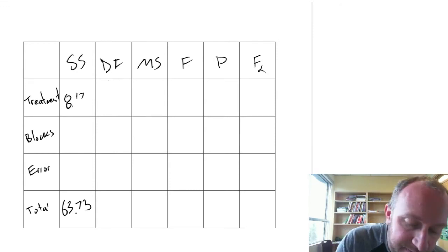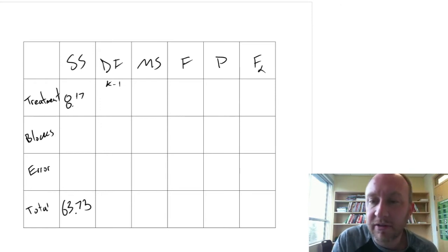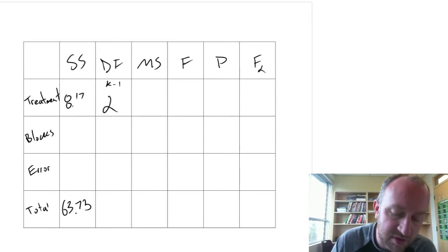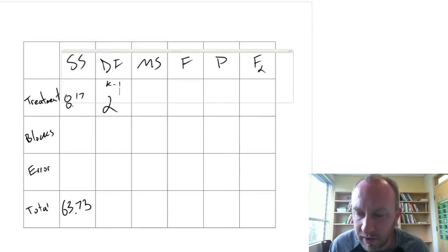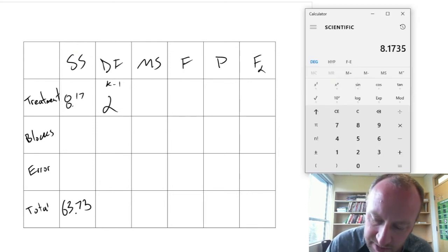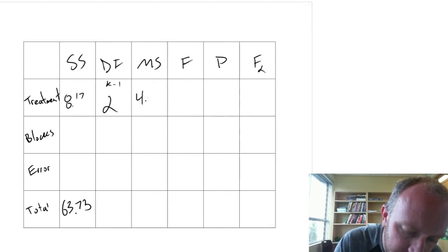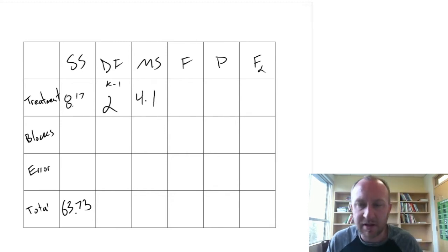8.17. Degrees of freedom. K minus 1. So that's 3 minus 1 is 2. Mean square. 8.17 divided by 2 is 4.1. And that's it for treatment for now.